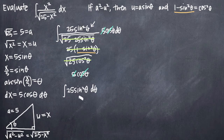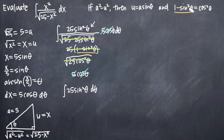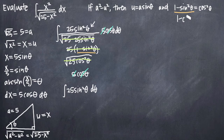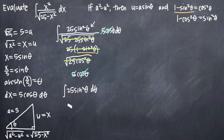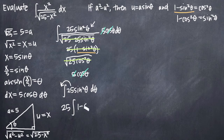At this point, since we may not know the integral of sine squared theta off the top of our heads, we'll use the identity 1 minus sine squared theta equals cosine squared theta. We solve it for sine squared theta, giving us 1 minus cosine squared theta. We substitute that in and bring the constant 25 out in front, getting 25 times the integral of 1 minus cosine squared theta d theta.